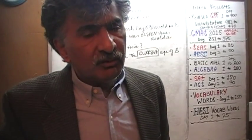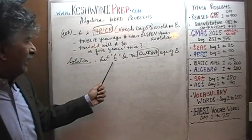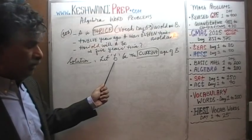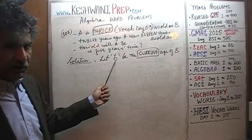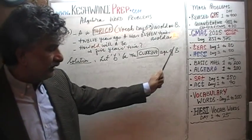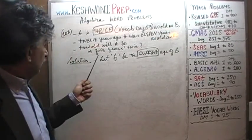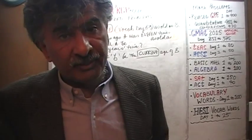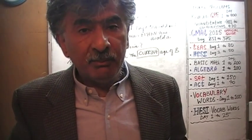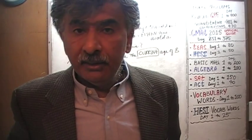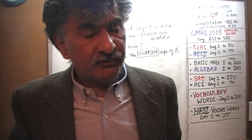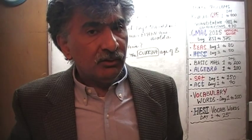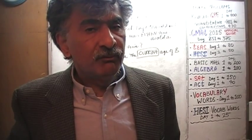Simply saying 'let b be the age of Mr. B' is not enough. How old is B — today, five years from now, or twelve years ago? In this problem we're dealing with three different time periods: today, twelve years ago (something happened), and five years from now (something they're asking about). That is why it is very important to clarify your variables from the very beginning.